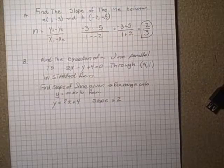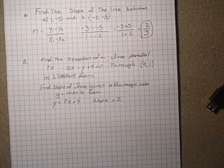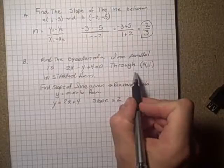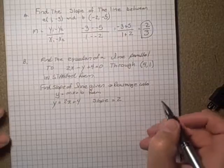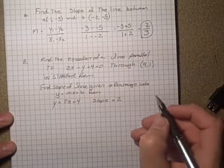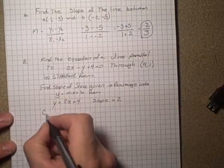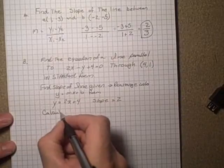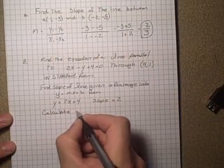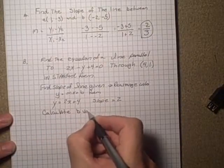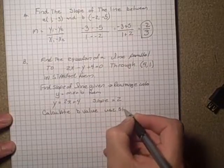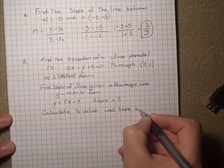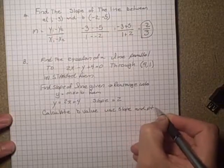We will then take that slope and use the y = mx + b form again to calculate the y-intercept, or b value, using the slope and the point given.